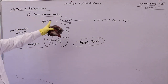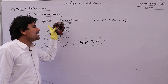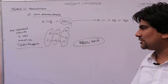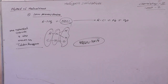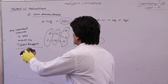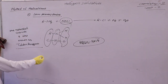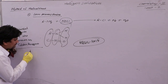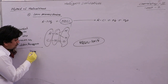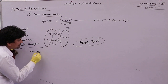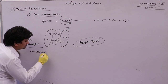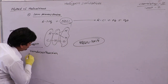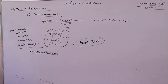To summarize: what happens when a primary amine reacts with nitrosyl chloride — it gives alkyl chloride, nitrogen gas, and water. The next reaction is the Hunsdiecker reaction.